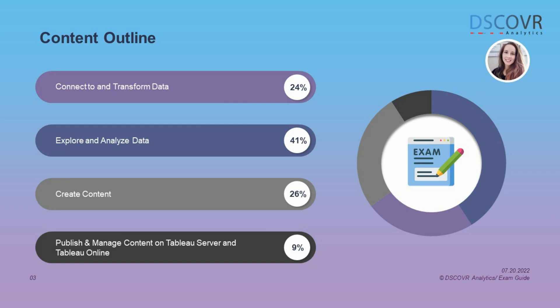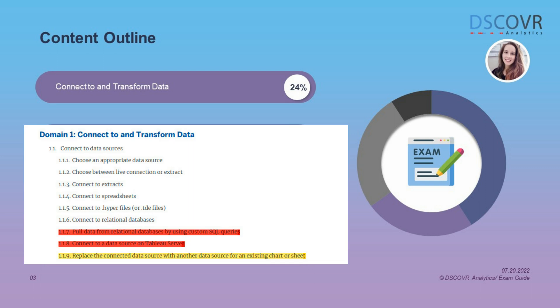Let's take a closer look at the domains covered in this exam. There are 4 domains in total. The first domain accounts for 24% of the overall exam content. The second domain accounts for a huge portion — 41%. Domain 3 represents 26% of the overall exam, and a very small portion, about 9%, is related to publishing and managing content online. Each domain is further broken down into subsections — download the official exam guide for a detailed breakdown, and I'll be covering these subsections in detail in upcoming videos.